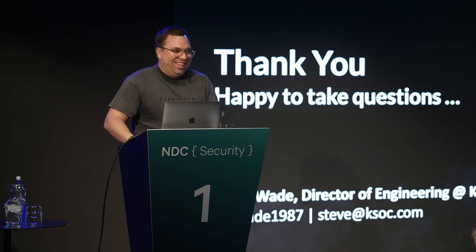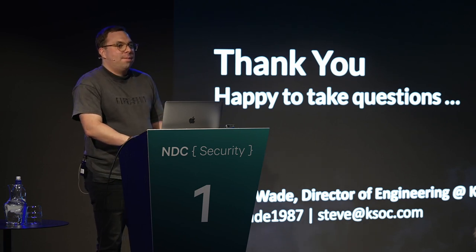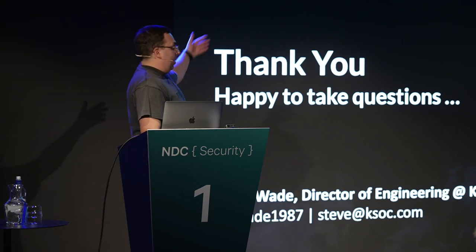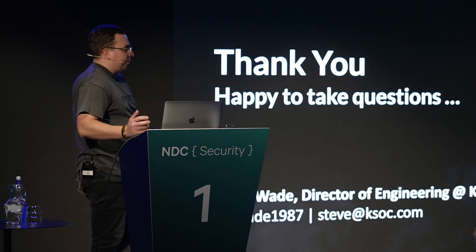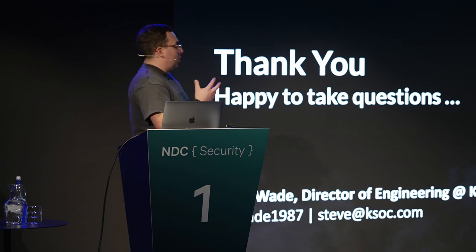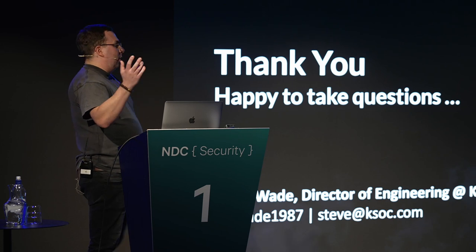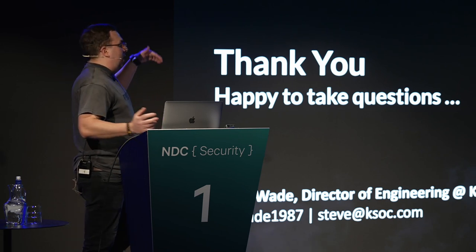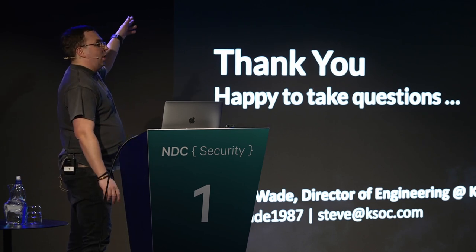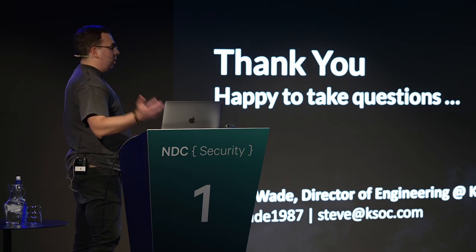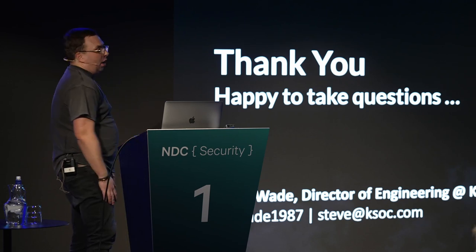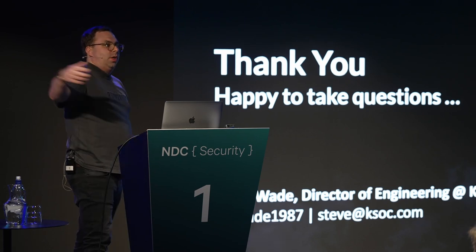To contribute to the OWASP Kubernetes Top 10: join the GitHub repository, add issues, commit upstream, add pull requests. There are 10 points on the OWASP Top 10. The curl-to-list-secrets issue I showed was actually a contribution from a pull request — it wasn't something we created. Join at github.com/OWASP/www-project-kubernetes-top-ten.